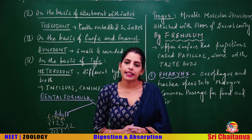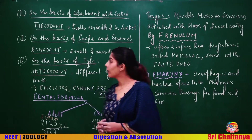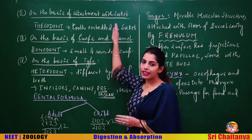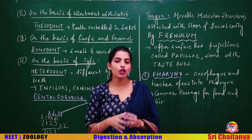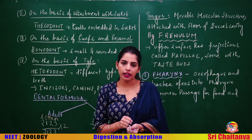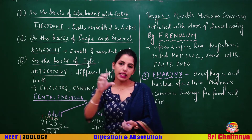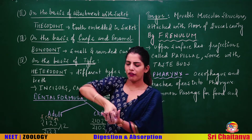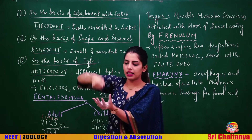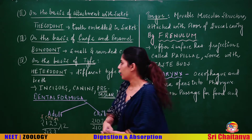The second type of human dentition is on the basis of attachment with the socket — thecodont. In thecodont dentition, teeth are perfectly embedded in the socket, not superficial but perfectly fit into it.